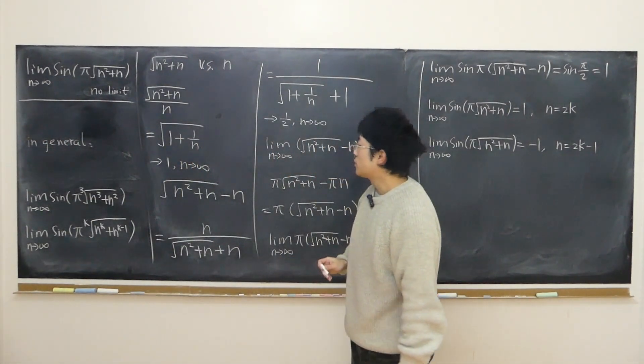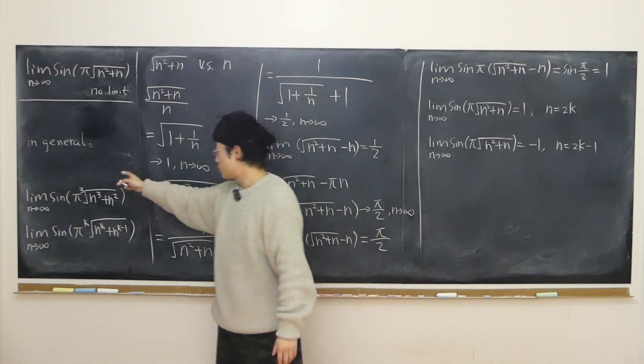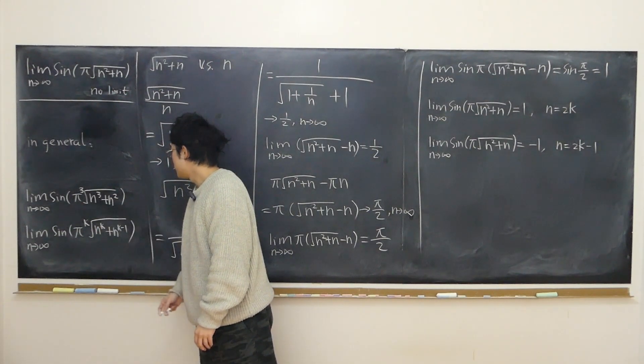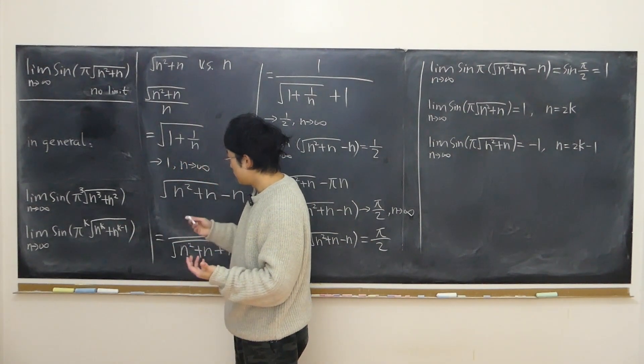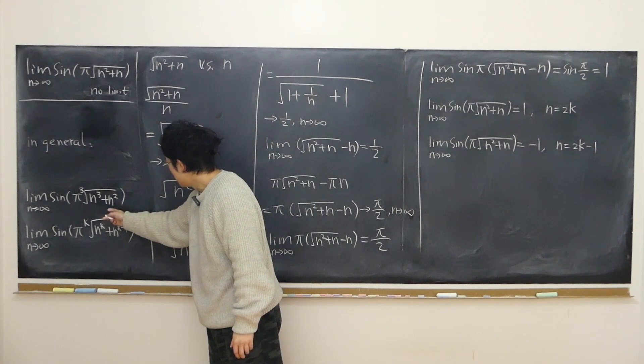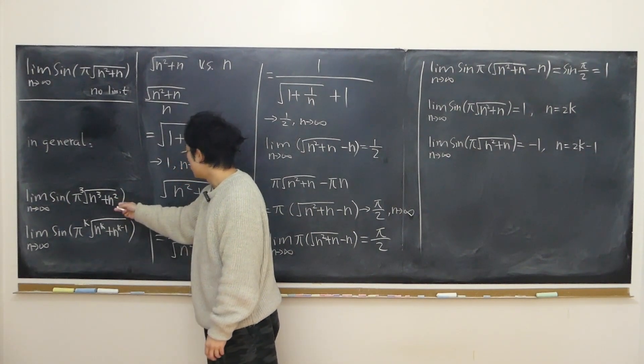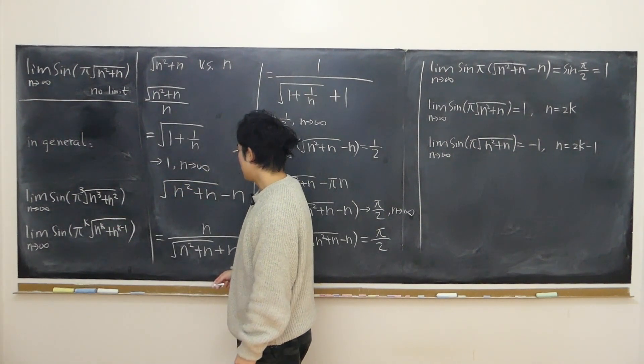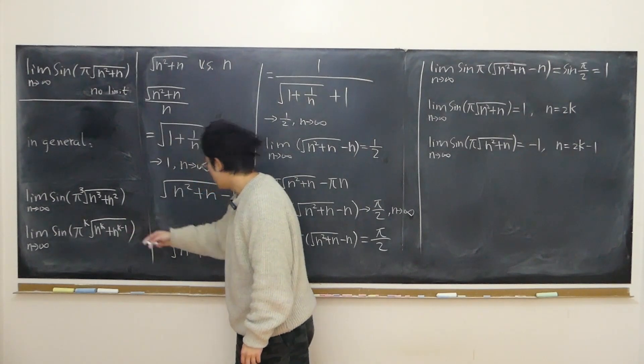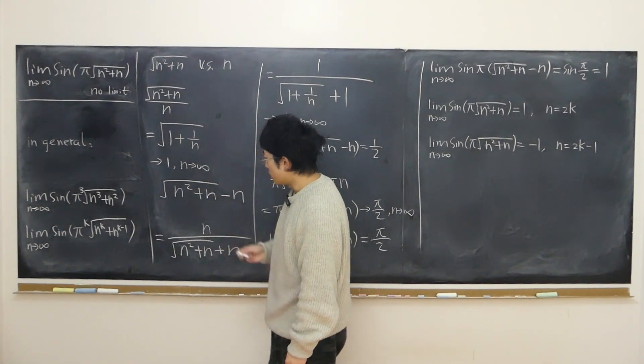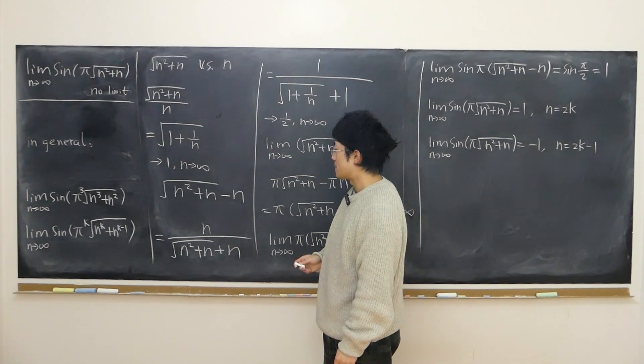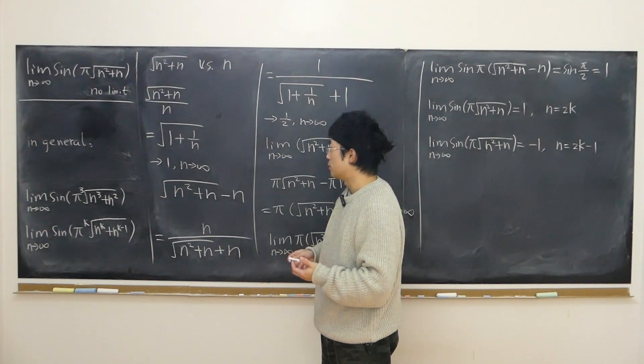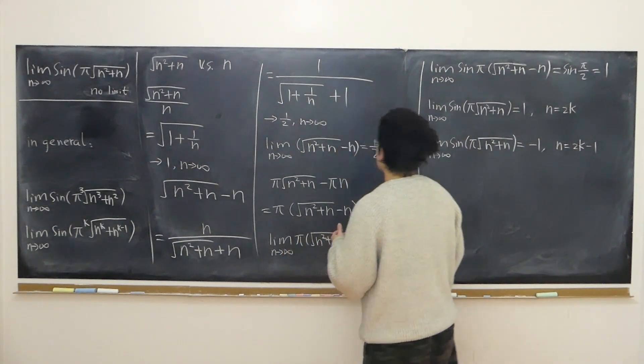Now the question is, I'm going to discuss in a future video the general case where if I change the square root into cubic root and kth root. Maybe we can add some coefficient in front of n squared. Maybe we can add n to the power of k minus one following this polynomial, and then we can discuss further.